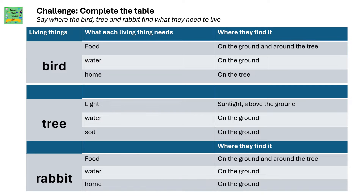A tree needs light, water, and soil. It can find light from sunlight above the ground. It can find water on the ground, and it can find soil in the ground. A rabbit needs food, water, and a home. A rabbit can find food on the ground and around the trees.